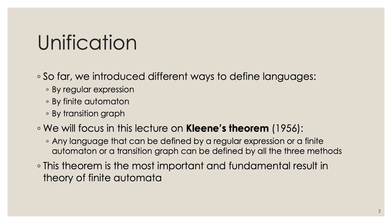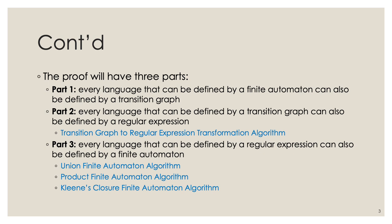Kleene's theorem gives us an equivalence: if you have a regular expression, you can necessarily have a finite automata or a transition graph. Likewise, if you have one of the three, you can have the two others. The theorem is really important, and through doing the proofs, we can arrive at different transformation algorithms that will be of great relevance to us.